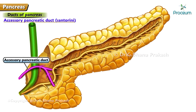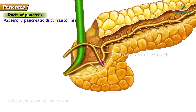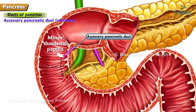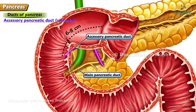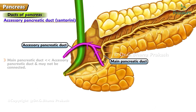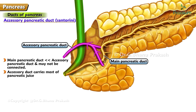Accessory pancreatic duct of Santorini: it begins in the lower part of the head, then runs upward and medially, crossing in front of the main pancreatic duct. It opens into the second part of the duodenum at the tip of the minor duodenal papilla, 2–3 cm above the opening of the main pancreatic duct, or 6–8 cm distal to the pylorus. Usually the accessory duct communicates with the main pancreatic duct. In some cases, the main duct is smaller than the accessory duct and the two may not be connected, in which case the accessory duct carries most of the pancreatic juice.